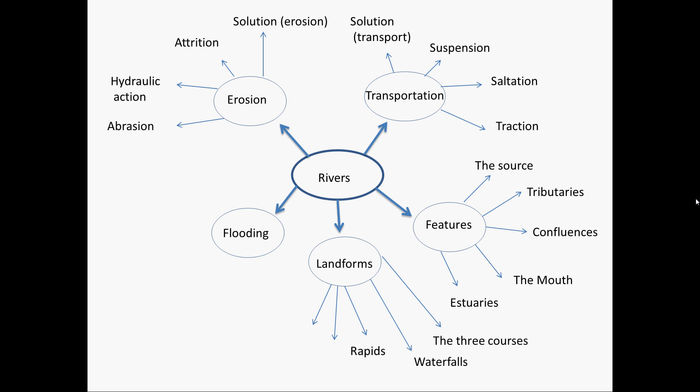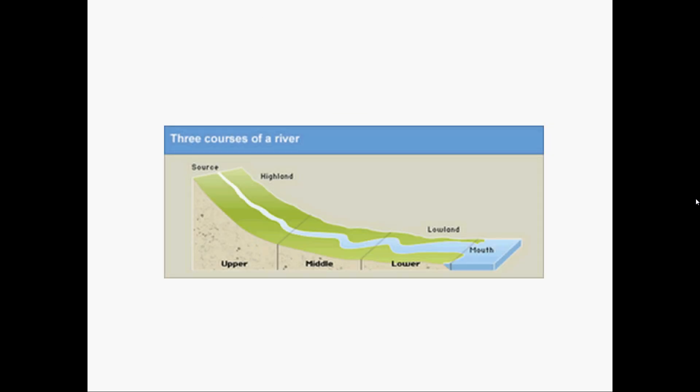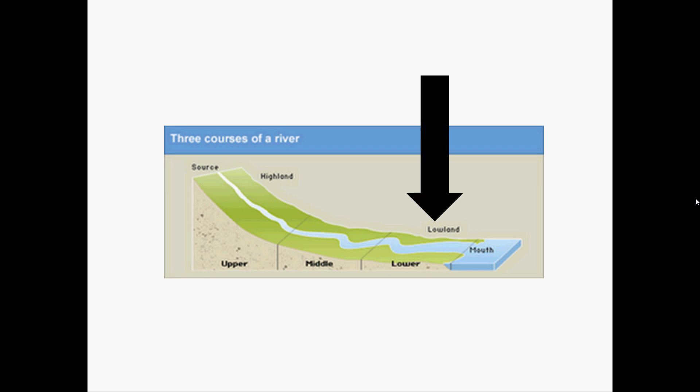Last week we looked at meanders, which are the bends in the river, and oxbow lakes, which are the bits of river that are cut off forming a lake. This week we're going to look at the lower course, which is the course nearest the sea.